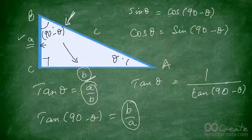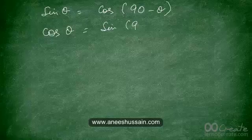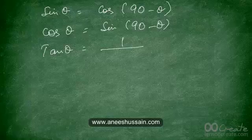So these three are very important rules: sine of theta equals cos of (90 minus theta); cos of theta equals sine of (90 minus theta); and tan of theta equals 1 upon tan of (90 minus theta).